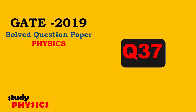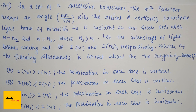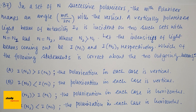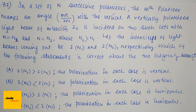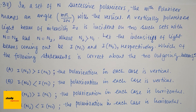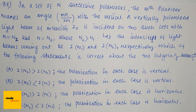Hi everyone, welcome to Study Physics. Here's question number 37. In a set of n successive polarizers, the mth polarizer makes an angle mπ/2n with the vertical. A vertically polarized light beam of intensity I₀ is incident on two such sets with n equal to n1 and n equal to n2, where n2 is greater than n1. Let the intensity of light beams coming out be I_n1 and I_n2 respectively. Which of the following statements is correct about the outgoing beams?